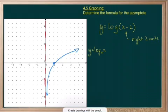If we do that, this point will move that way. But the asymptote will also move 2 units.